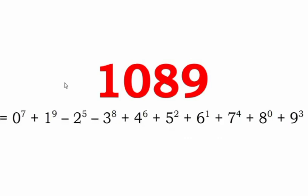Yet another representation looks like: 0 to the power of 7 plus 1 to the power of 9 minus 2 to the power of 5 minus 3 to the power of 8 plus 4 to the power of 6 plus 5 squared plus 6 to the power of 1 plus 7 to the power of 4 plus 8 to the power of 0 plus 9 cubed. This representation uses all the digits from 0 to 9.